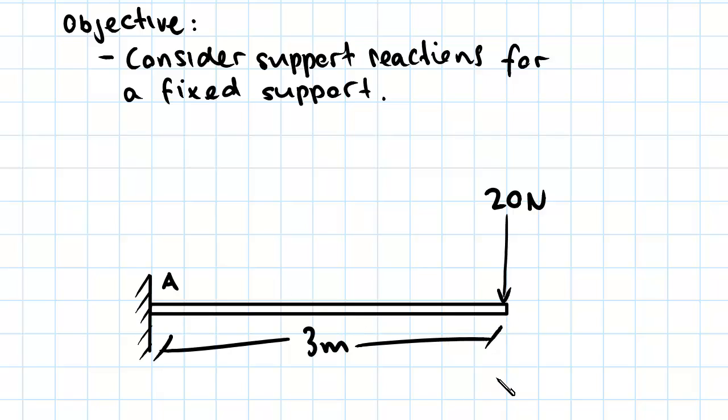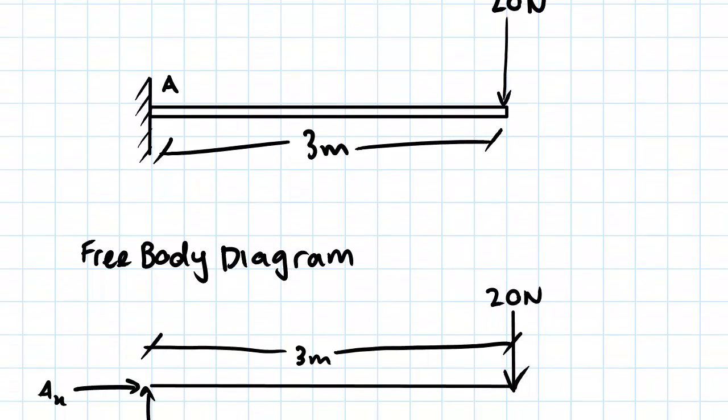What we've got is a three meter long beam that's cantilevered out at this point A, and we have a 20 newton force on the end of this three meter beam. So what we're going to be doing is working out the different support reactions at A. Our first step, as always, is to draw a free body diagram.